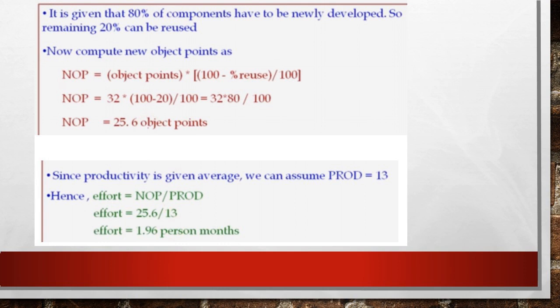Now we compute NOP, new object points. NOP is equal to total object points into 100 minus percentage of reuse divided by 100. Substituting the values, there are 32 object points and 20% can be reused. So 32 into 100 minus 20 divided by 100 is equal to 32 into 80 divided by 100, which equals 25.6 object points.